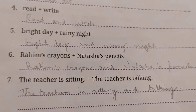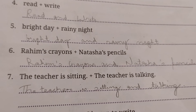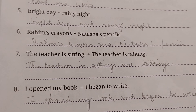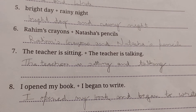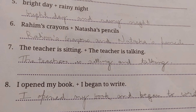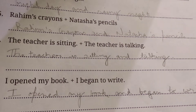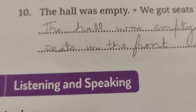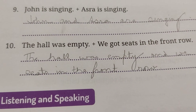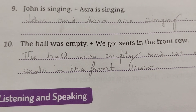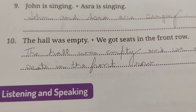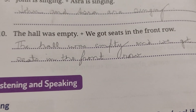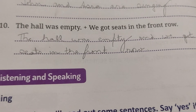The teacher is sitting plus the teacher is talking — the teacher is sitting AND talking; 'the teacher is' is replaced by AND. Next: I opened my book plus I began to write becomes I opened my book AND began to write. In all the sentences AND is acting as a conjunction. For number 9: John is singing plus Asra is singing becomes John and Asra are singing. Number 10: The hall was empty plus we got seats in the front row becomes the hall was empty and we got seats in the front row.